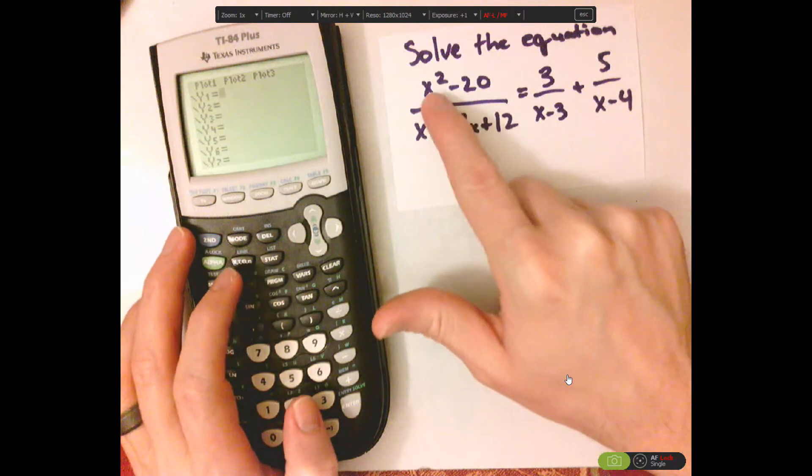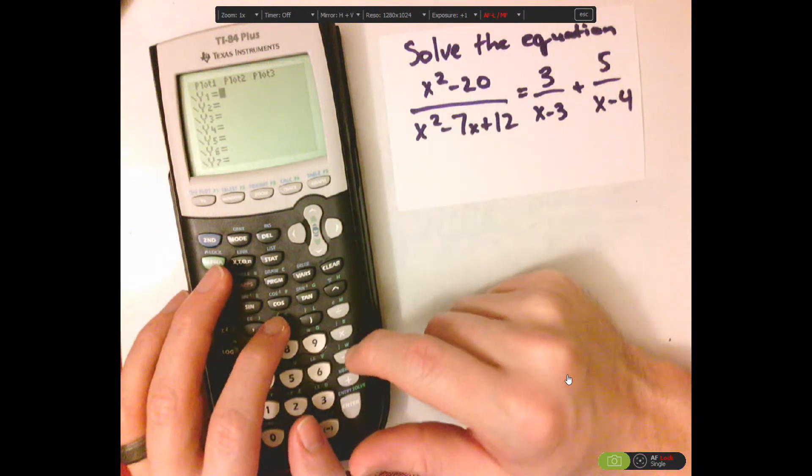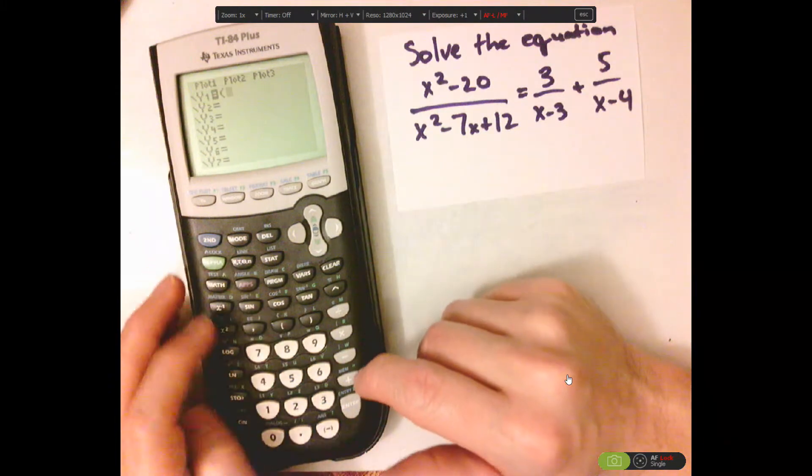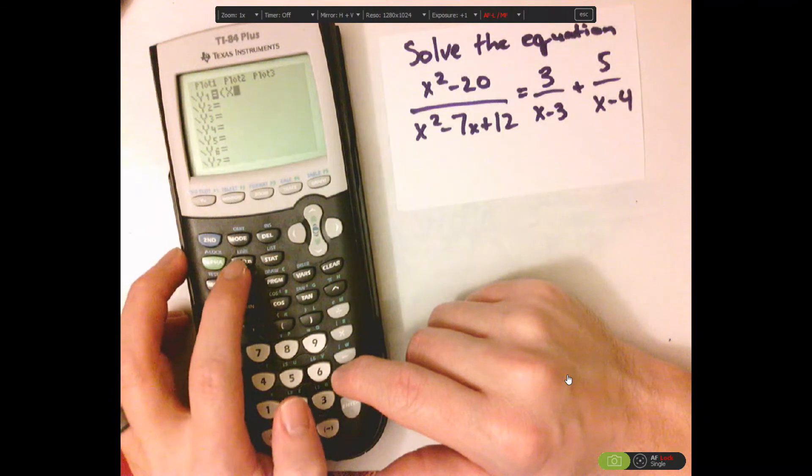So, I have to use parentheses to separate the numerator. So, y1 equals parentheses x, and I'm pushing the variable button, squared minus 20, closed parentheses, divided by, open parentheses,